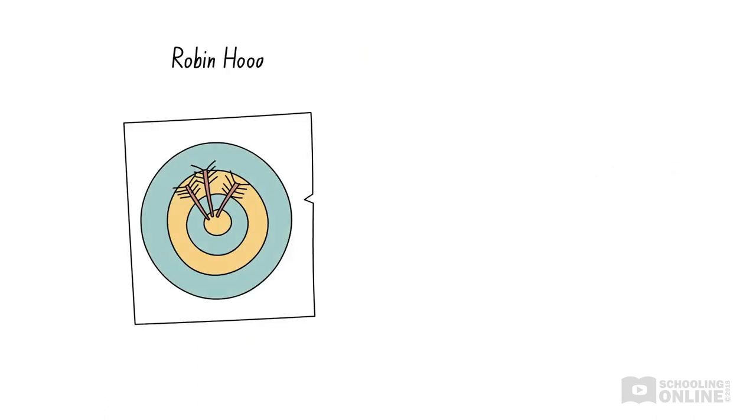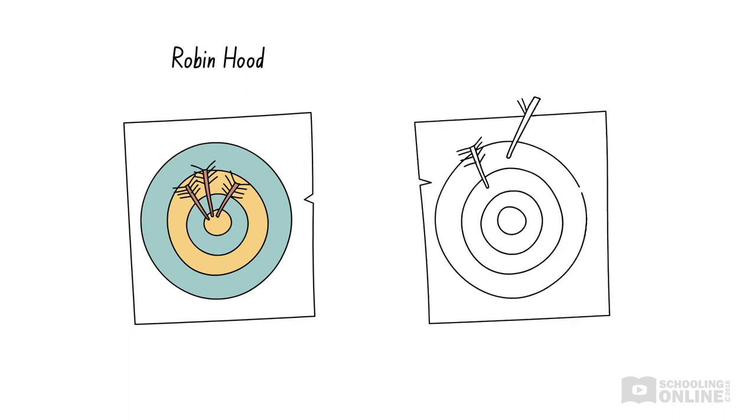Naturally, Robin Hood hits the bullseye with each of his three shots, while his competitors' arrows hit the target all over the place. So who is more accurate? It's quite clear that Robin Hood is the more accurate archer, as all his arrows hit the bullseye.